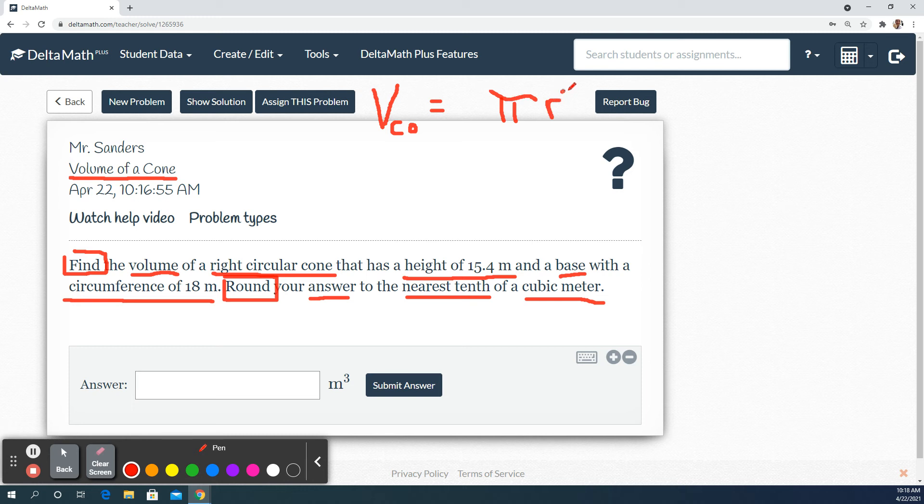Pi r squared is the area of a circle. And then if this were like a cylinder, we would times it by the height. And then the cone idea - just like a triangle is half of a rectangle, a cone is one third of a cylinder.